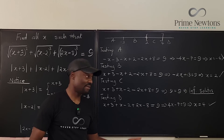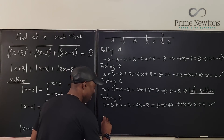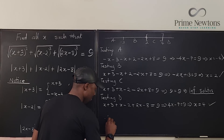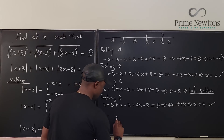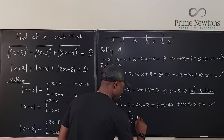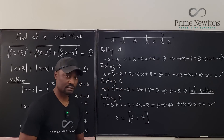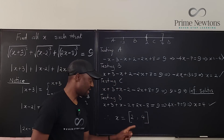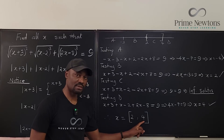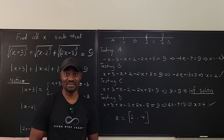The solution is therefore X starting from 2 all the way to 4 — the closed interval [2, 4]. Never stop learning, never stop living. Bye.